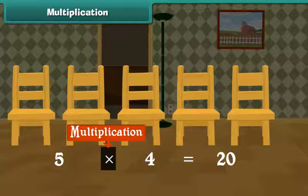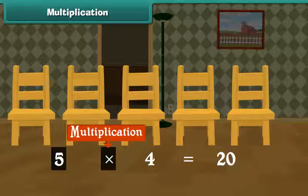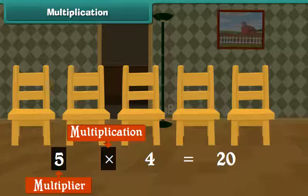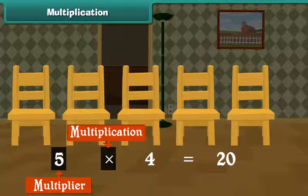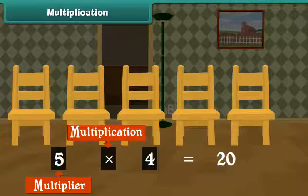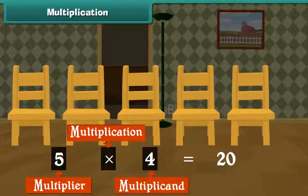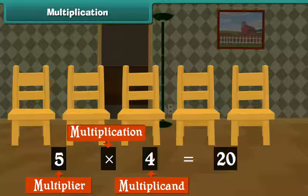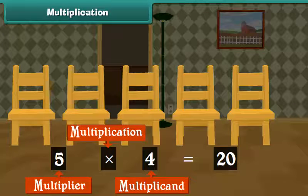The first number, 5, is called the multiplier. The second number, 4, is called the multiplicand. The result of multiplication is called the product.